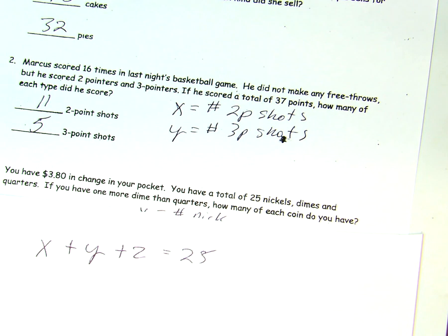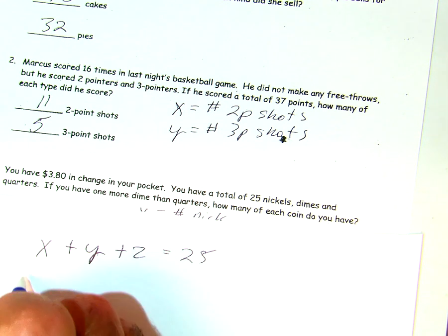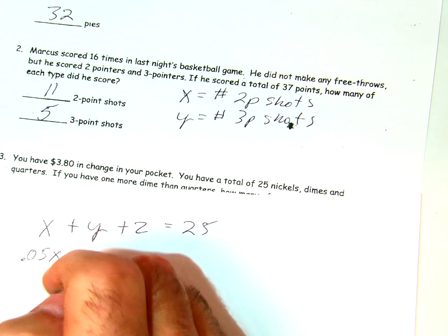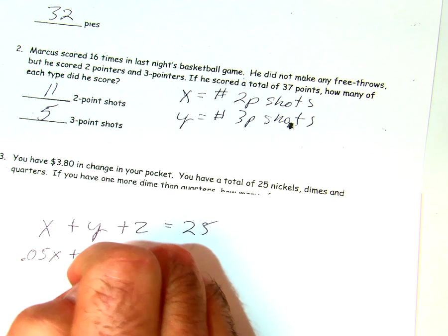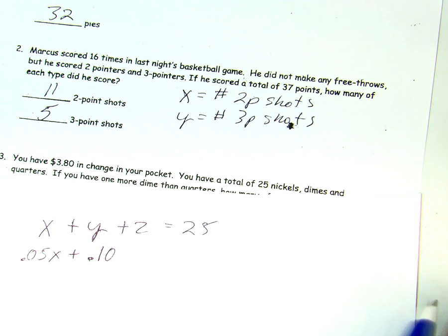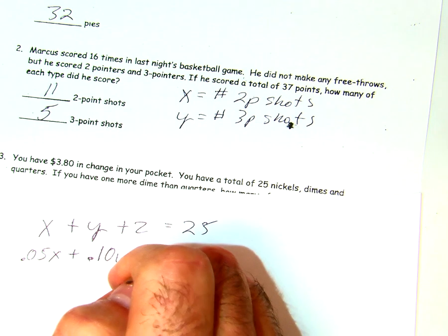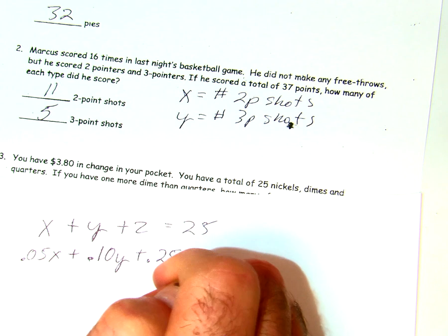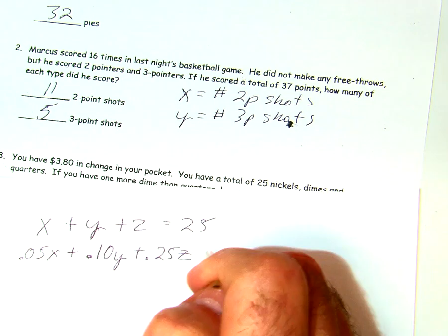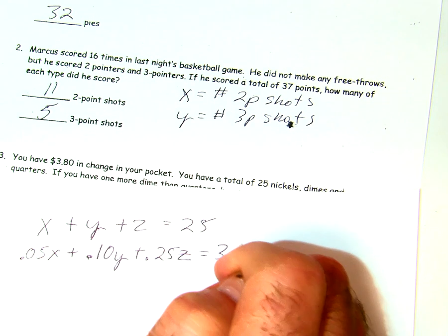And then the amount, the value is $3.80, so we have to use the value for each coin. So, we have a nickel, 0.05x, plus a dime. We can just make that 0.10y. And then the quarter is 0.25z. Let me put a slash there. And that total value is $3.80.